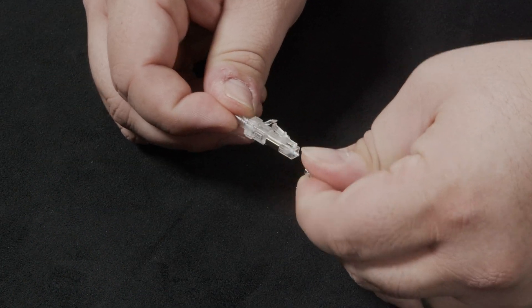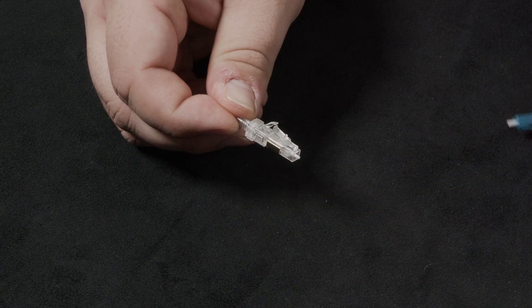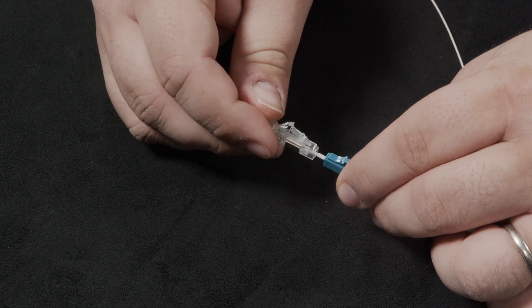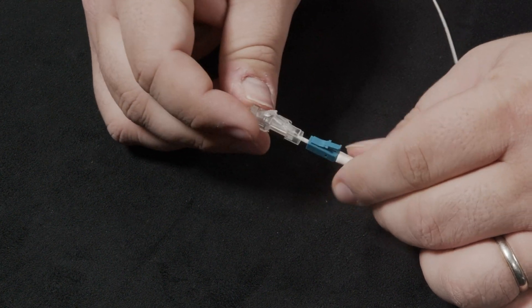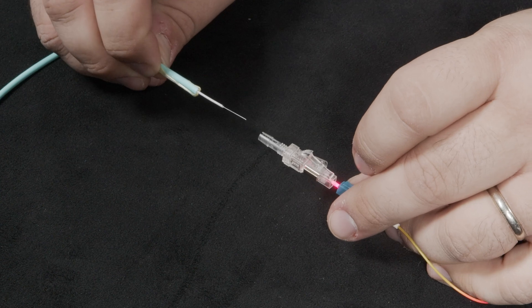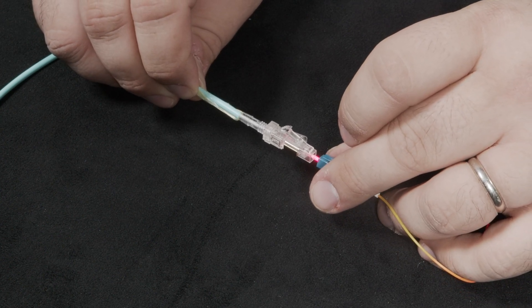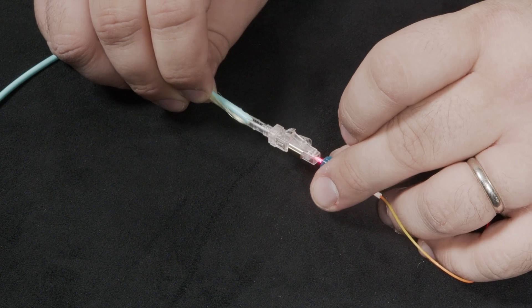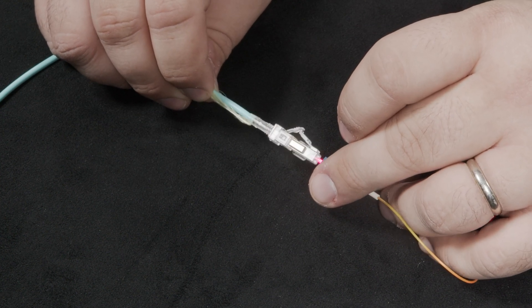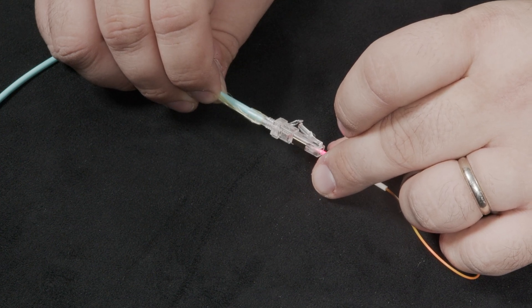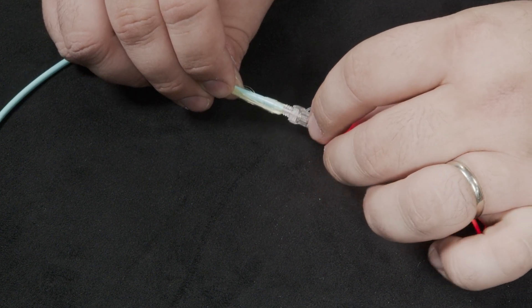Next, take your LC termination and remove the dust cap. Slide the sleeve over the white portion of the LC termination. Turn on the VFL and take the fiber and feed it into the end of the LC connector. Watch for the light to dim or disappear entirely.